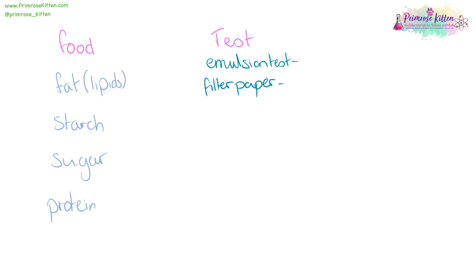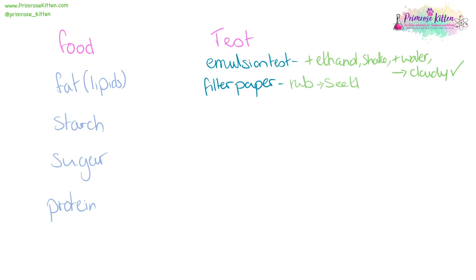Fats can be tested for using the emulsion test or the filter paper test. For the emulsion test, you add ethanol, shake it, add water, and look for a color change — if it goes cloudy, then lipids are present. With the filter paper test, if you rub it on filter paper, the filter paper should go see-through.